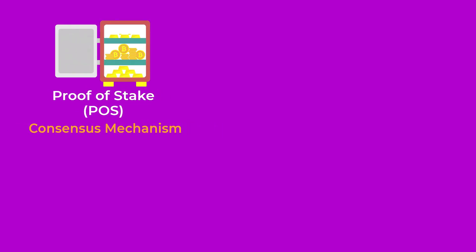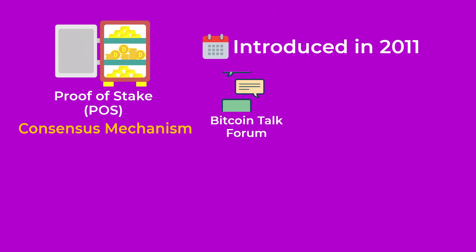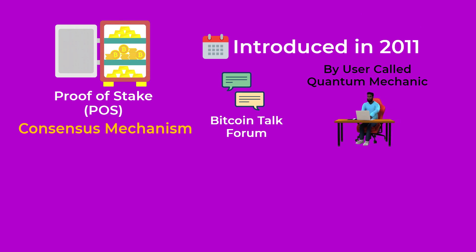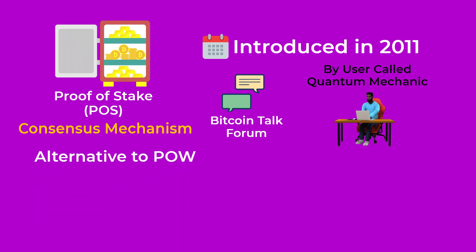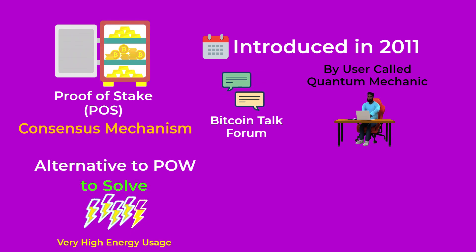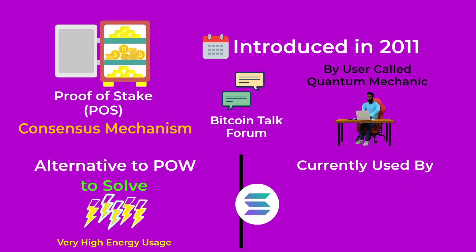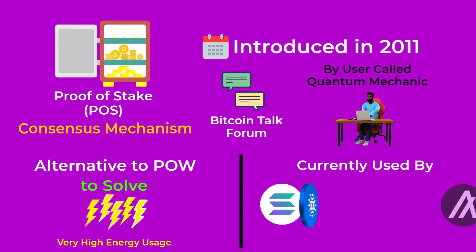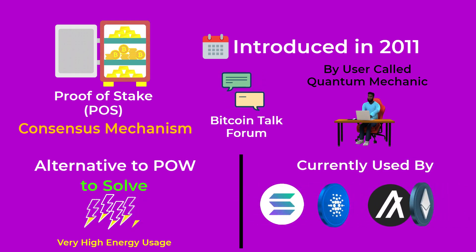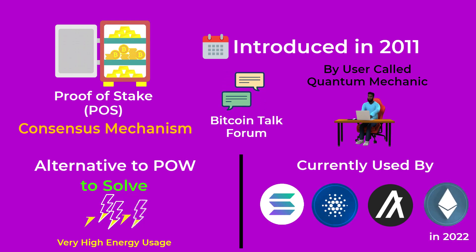The proof of stake is a consensus mechanism introduced in 2011 on the Bitcoin Talk Forum by a user named Quantum Mechanic. It was introduced as an alternative to proof of work to solve the problem of very high energy usage in proof of work. Proof of stake is currently used by Solana, Cardano, and Algorand, with Ethereum also planning to switch from proof of work to proof of stake in 2022.